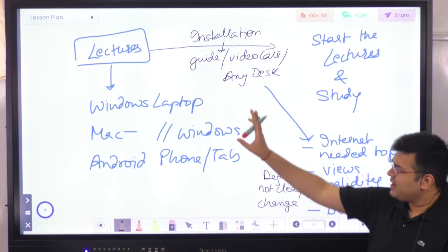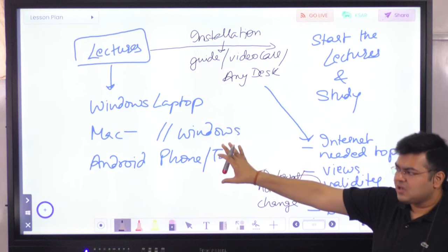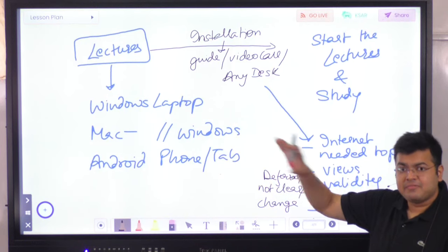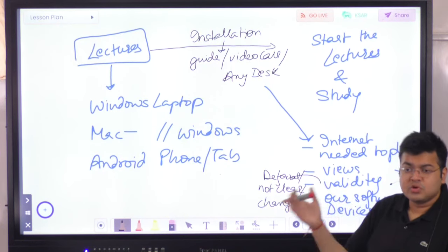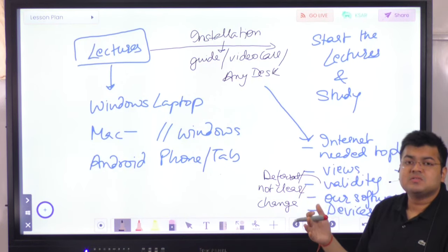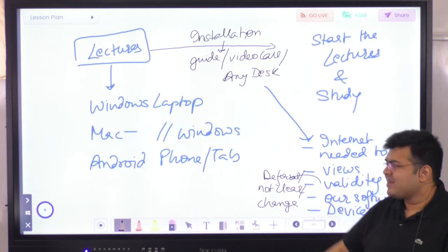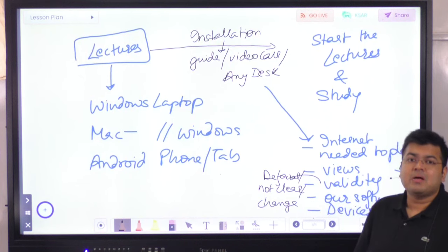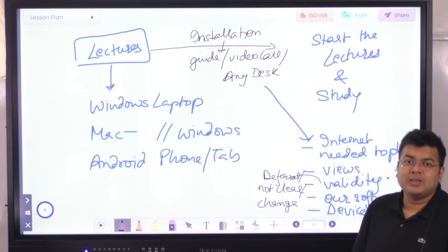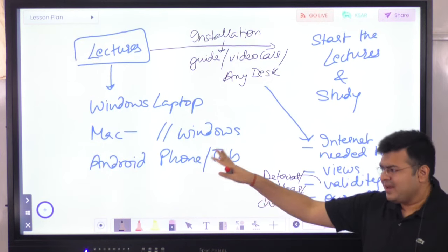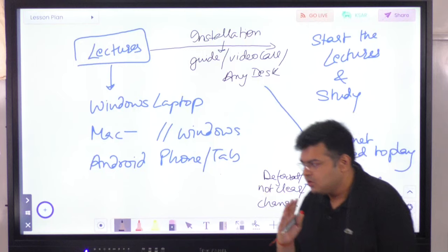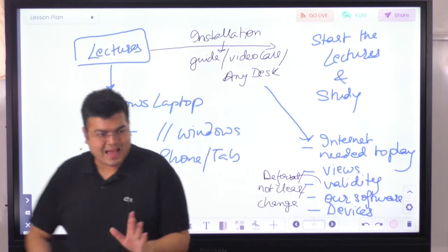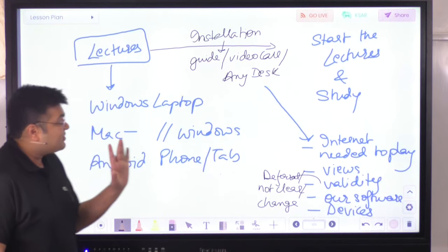Even in live class you study for two and a half to three hours at a stretch, so the same discipline applies at home. The convenience of time and location is there, but it doesn't replace the respect and focus required for studying. If you have a two to three hour commute and absolutely must use your phone, that option is available — but writing notes becomes difficult, so use it only when necessary.